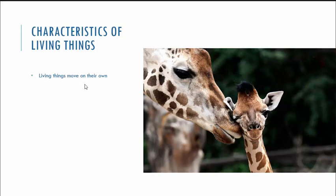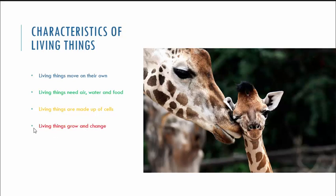Living things move on their own. The second one is that living things need air, water, and food to breathe. The third is that living things are made up of cells. The next one is that living things grow and change. Then living things respond to changes around them, and living things reproduce.